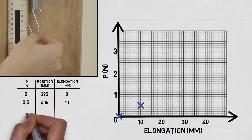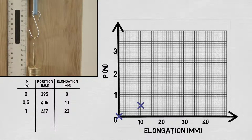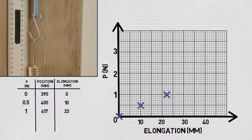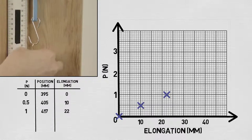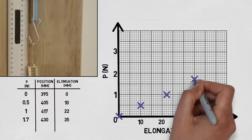The next weight brings us to 1 newton, and now the spring has deformed to 417 millimeters, or a total deformation of 22 millimeters. Now let's add a few more weights. Now we're at 1.7 newtons, and our ruler is down to 430 millimeters, giving an elongation of 35 millimeters. Starting to see a bit of a pattern?